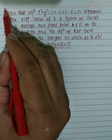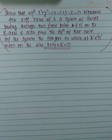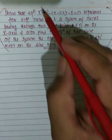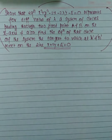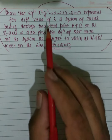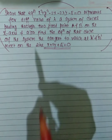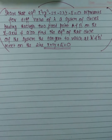Let's understand what is happening in the question. First of all, we have a system of circles — a family of circles — with a lambda parameter. As lambda changes, the circle changes. So the question is: for different values of lambda, it is a system of circles passing through two fixed points.